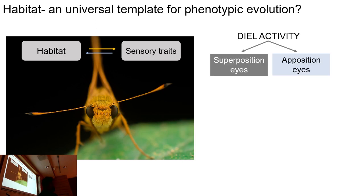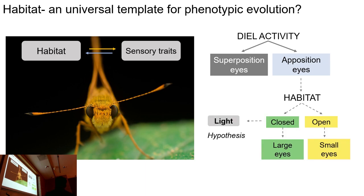Diurnal activity — whether you are a day flyer, a night flyer, or crepuscular — can have a really big impact on your eye anatomy. In insects, night fliers have the superposition type of eyes, and day fliers have the apposition type of eyes. Within these diurnal lineages, many species can be found in open or closed habitats, and if you extend this vertebrate hypothesis to invertebrates, you could say species occurring in closed forest environments should have larger eyes, while those in open environments should have smaller eyes. We wanted to test this using butterflies as the model.